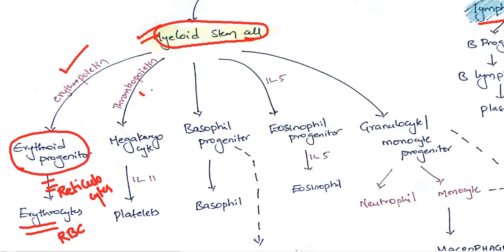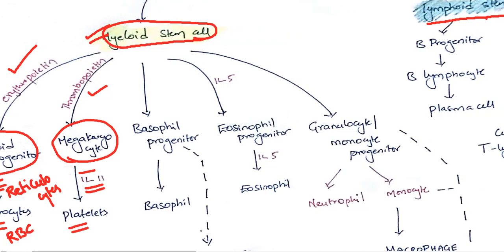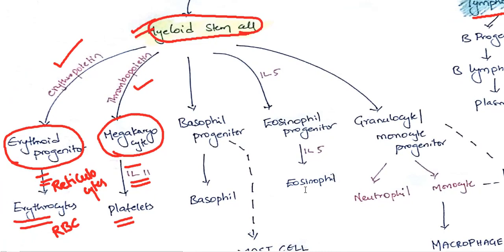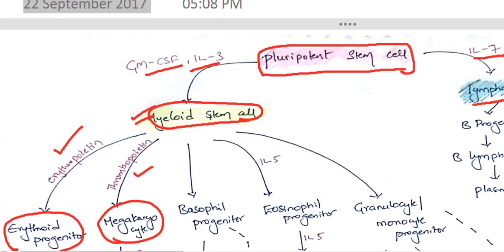Thrombopoietin stimulates myeloid stem cell to give megakaryocytes. And with the help of interleukin-11, we get platelets. Interleukin-11 helps in formation of platelets — this is an important thing.